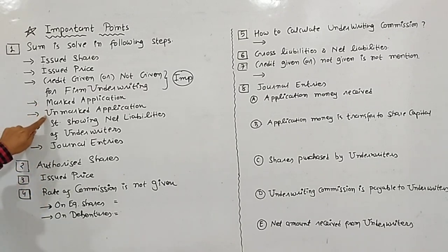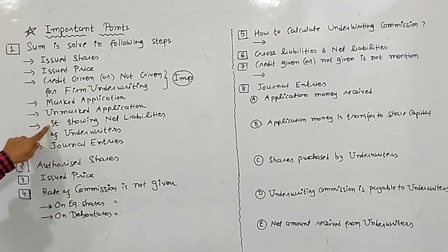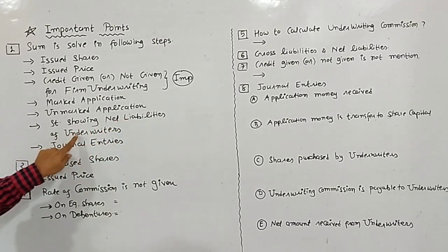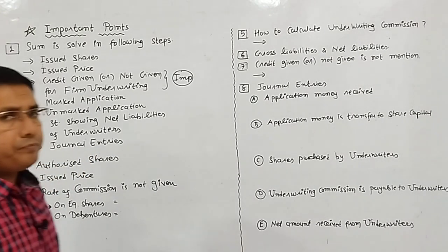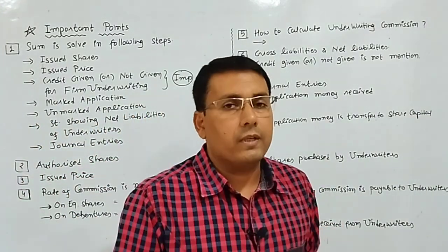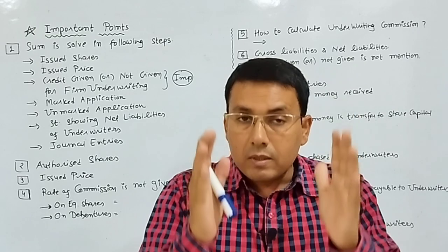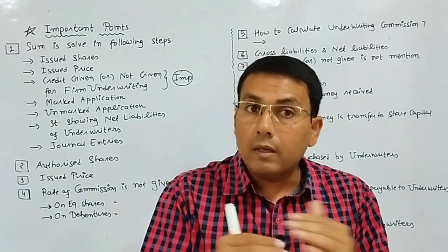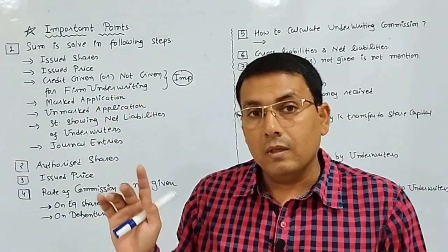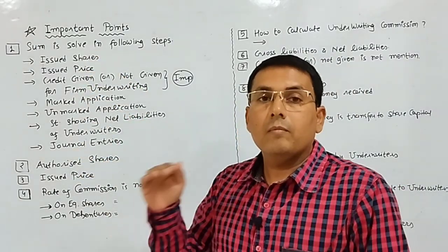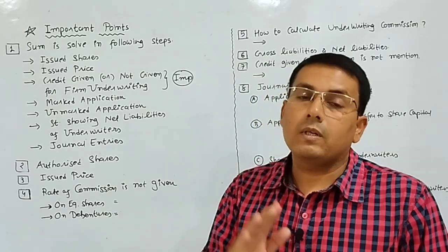After mark application comes unmark application. Next is the statement showing net liabilities of underwriters, and finally you write the general entries. These are the steps — solve the sum in this exact order in the exam, one by one.